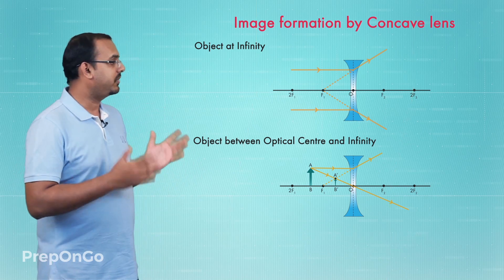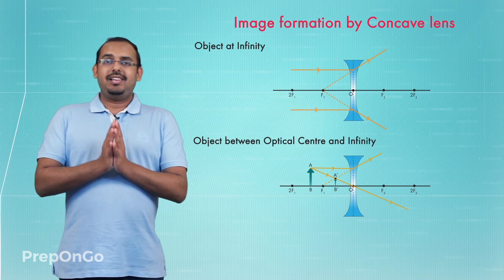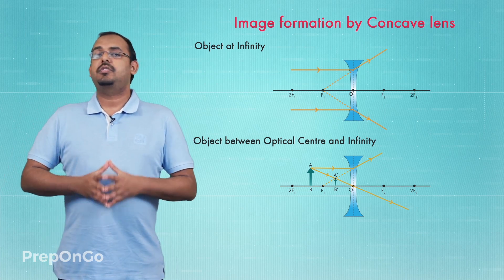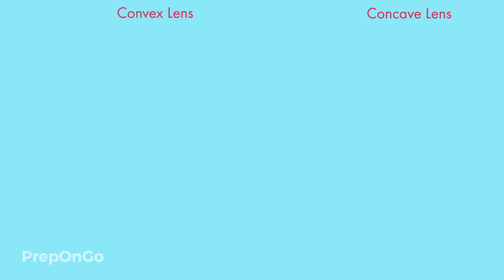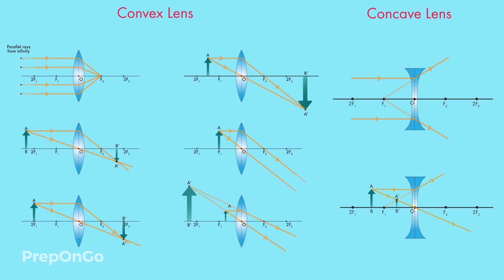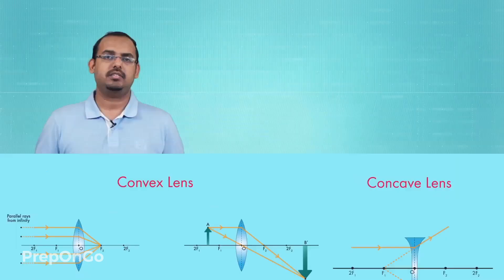Up to this point in the chapter we have studied all the image formation cases with both a convex lens and a concave lens, covering the basic principles of refraction of light and how special rays help us understand the behavior of spherical lenses. Now we'll look at the quantitative aspect — how we make measurements and calculations with respect to ray diagrams. In the upcoming lecture we'll talk about sign conventions. See you in the next lecture.